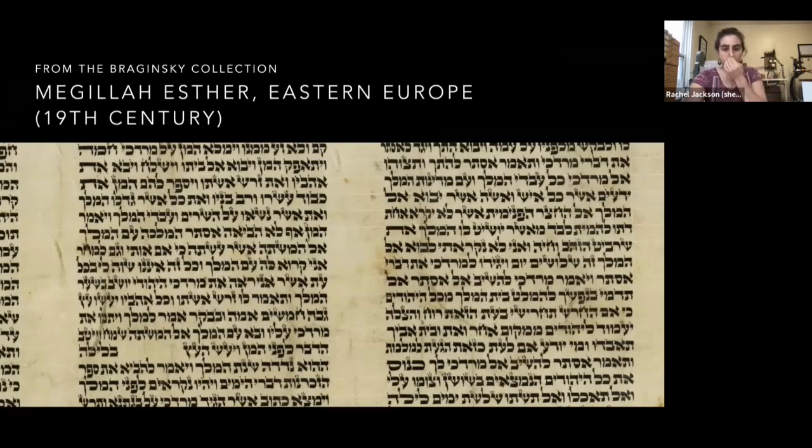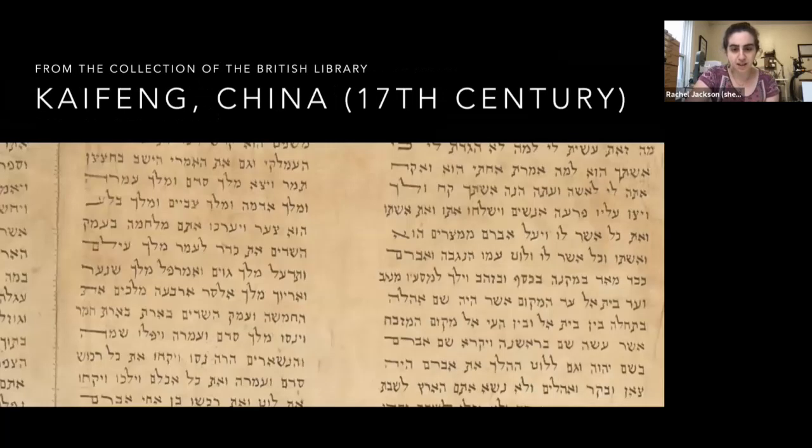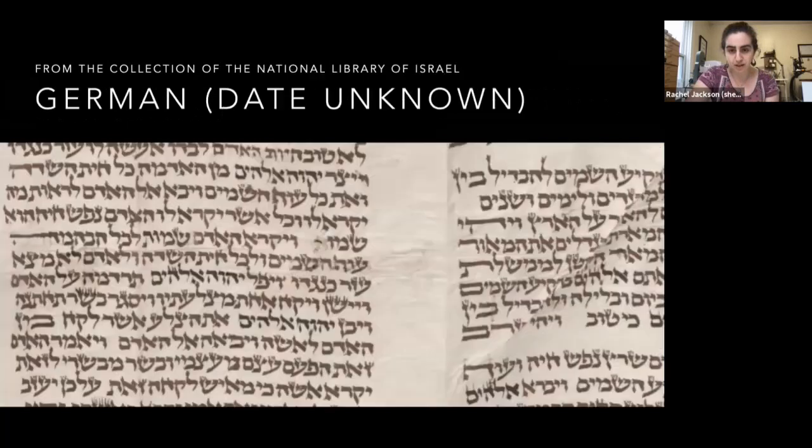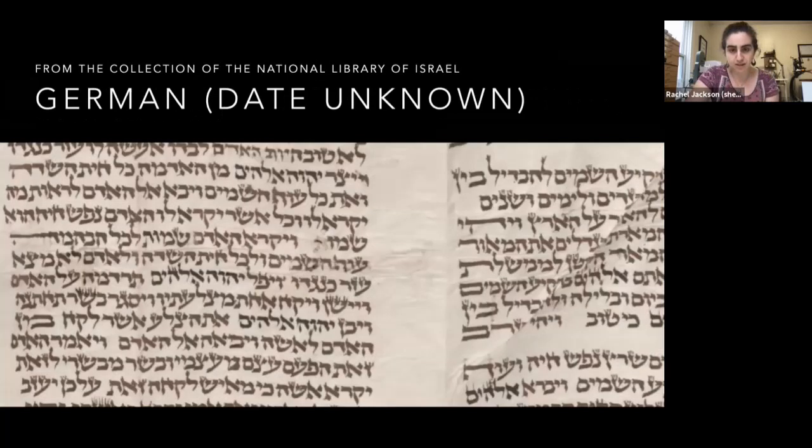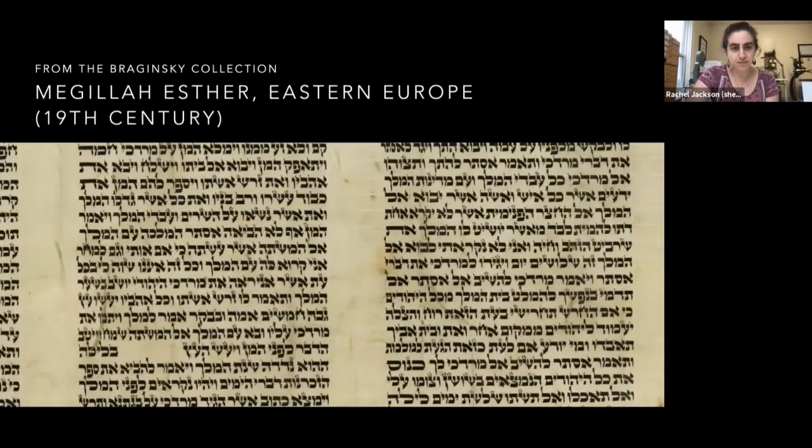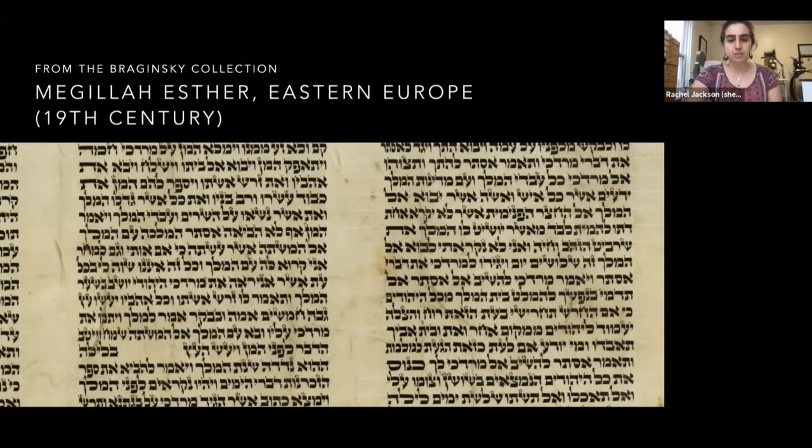And this is an example of a, this is actually the book of Esther, Megillah Esther. And it is a fairly standard Ashkenazi script as well. So those are some examples. I'm just going to go back through those so you can see how different those scripts look. Does that make sense?